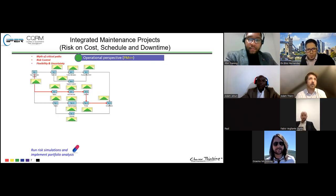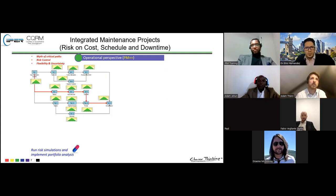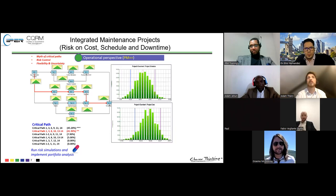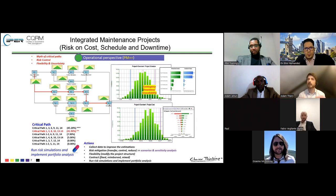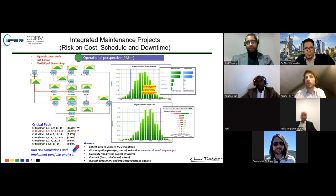An integrated view of schedule and cost risk analysis looks at the critical path — the activities likely to drive time outcomes — and then fundamentally how that leads back to cost outcomes. When we look at cost and time together, we use sensitivity analysis and critical success factors to understand all the data combined, to help inform decisions and identify what is really driving our outcomes.